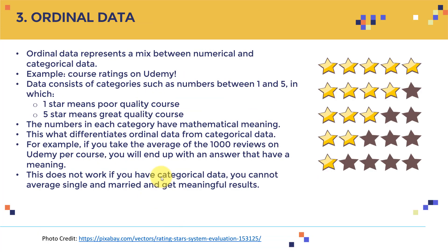The last type is ordinal data. Ordinal data represents a mix between numerical and categorical — like course ratings on Udemy. The data has both numbers and categories, but these numbers actually have meaning between them as well. One star means poor quality, five stars means great quality course. The numbers in each category have mathematical meaning, and that's what differentiates ordinal data from categorical data. For example, if you take the average of 1,000 Udemy reviews, you'll end up with an answer that has real meaning and you can perform meaningful mathematical operations.